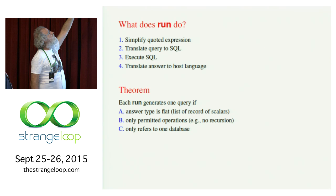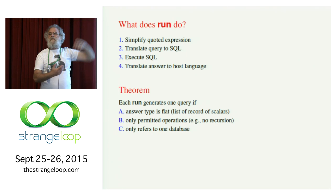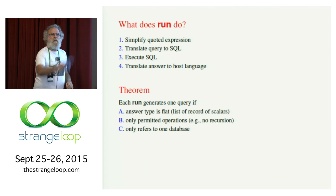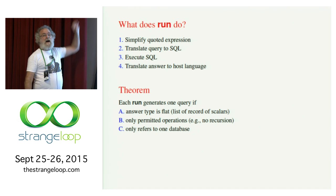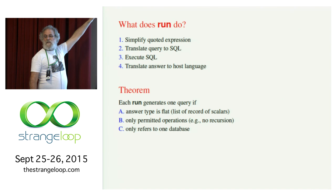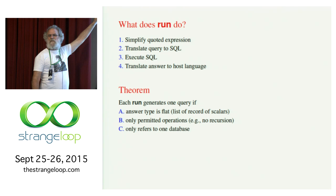Remember, if you took the whole database and read it in, that would be too expensive. But the answers are usually much smaller so we assume we can translate those at once. If you wanted to, you could add streaming, but I won't talk about that. And then we get a theorem — warm fuzzy feelings — that each run generates a query, if the answer type is flat, meaning it's a table, meaning it's a list of records of scalars, where scalars is a basic type such as integer or string. That's exactly what you can store in SQL.